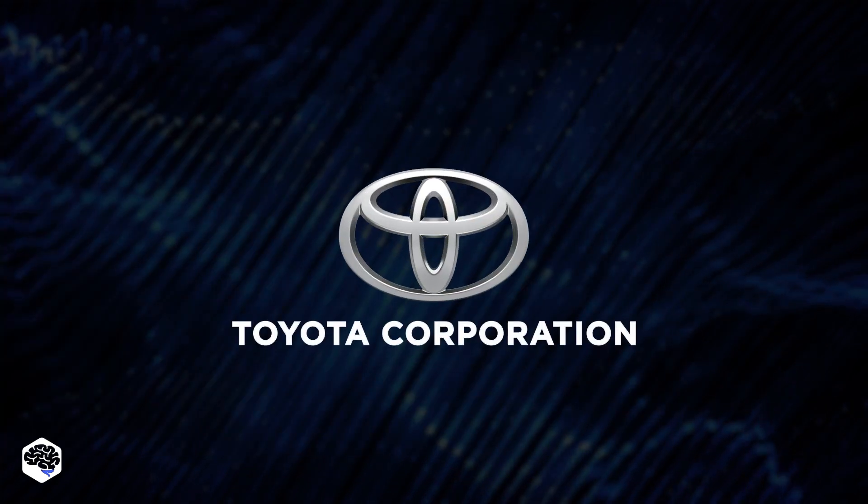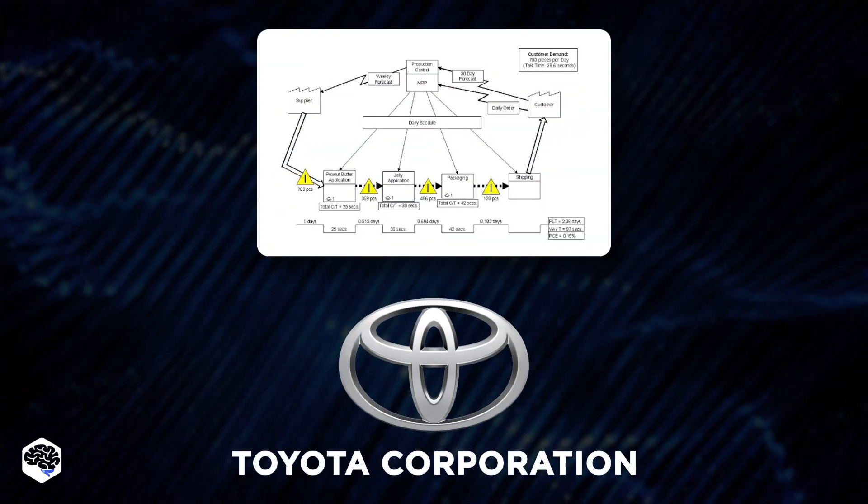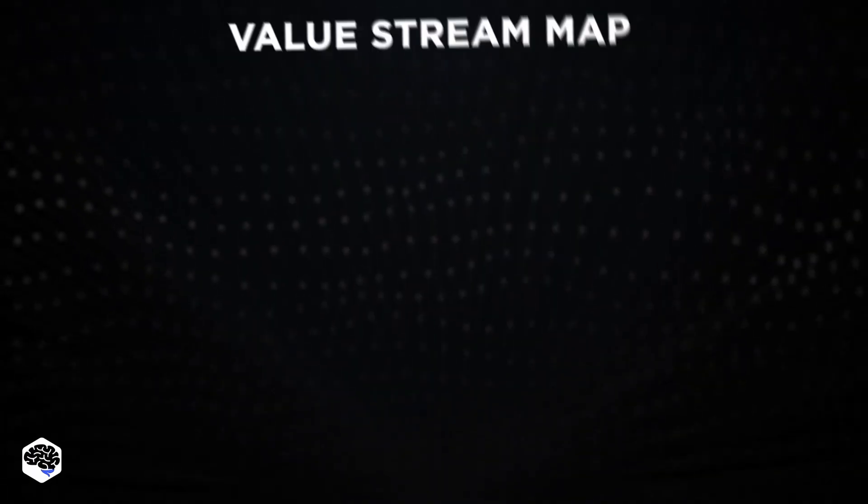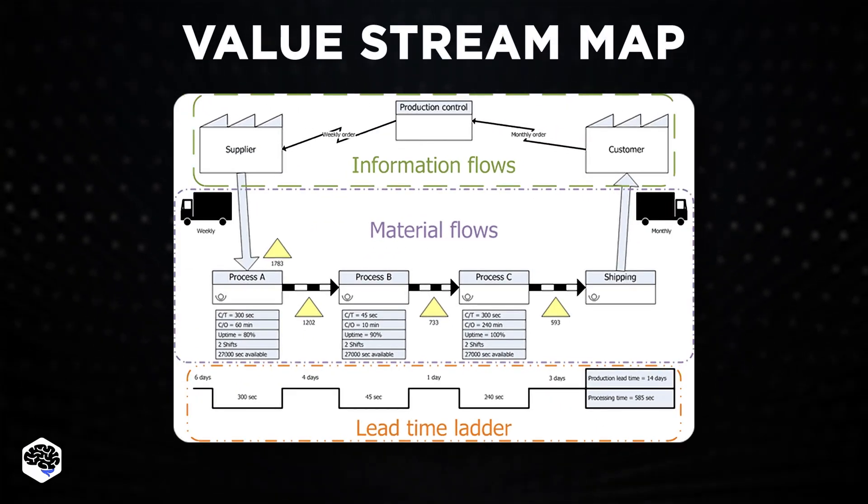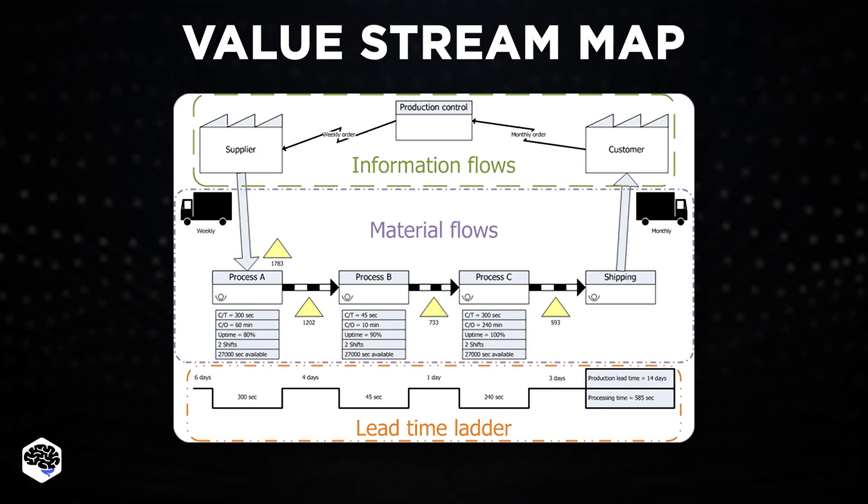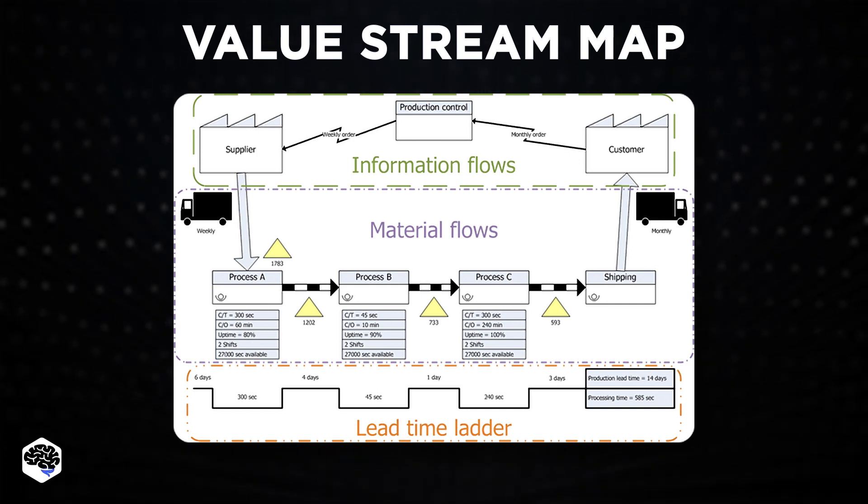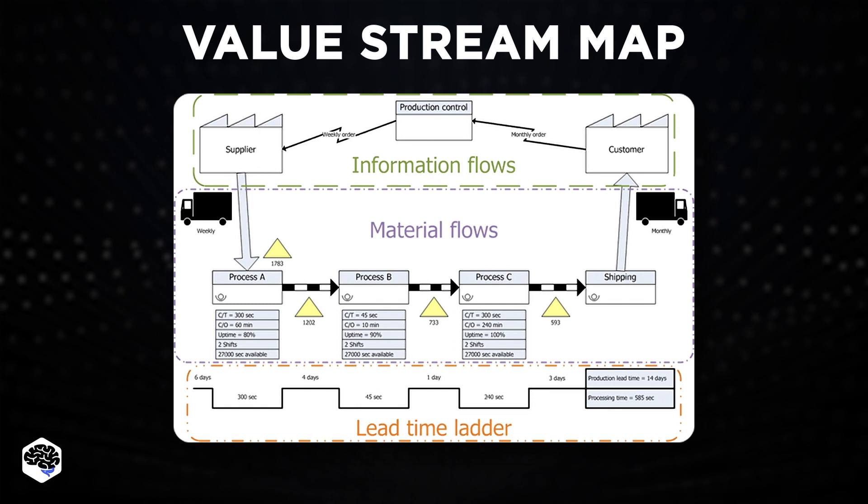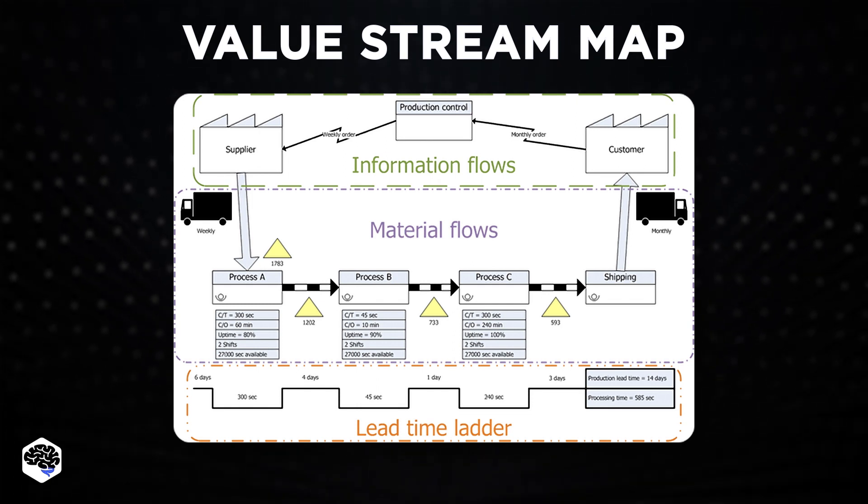One way or another, the success of Toyota Motors caught the public's attention. Soon after that, VSM, or Systematizing the Flow of Materials and Information, as it was called in Japan, appeared in all the advisory materials for efficient business teams.